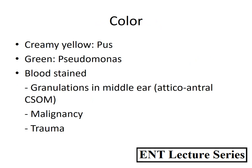The color of the discharge can be creamy yellow, indicating it is pus, for example in acute suppurative otitis media or chronic otitis media. It can be greenish, implying Pseudomonas infection. Or it can be blood-stained. The causes of blood-stained ear discharge are: granulations in the middle ear, more commonly with atticoantral type of CSOM than tubotympanic; malignancy such as squamous cell carcinoma of the external or middle ear; or trauma, which also leads to blood-stained ear discharge.